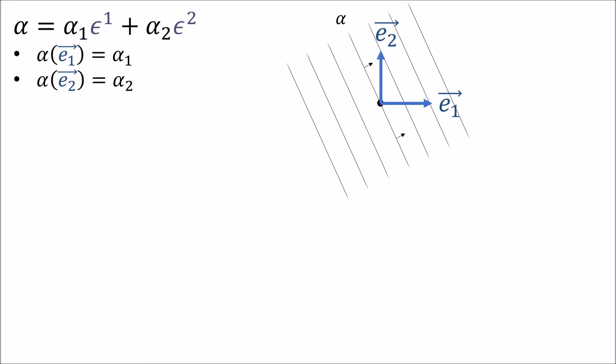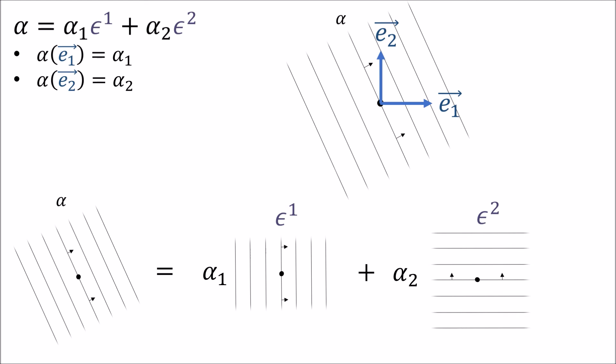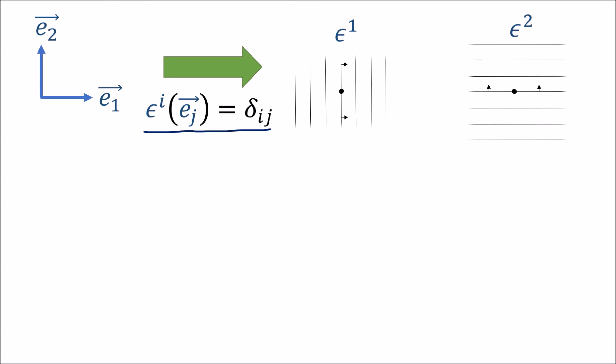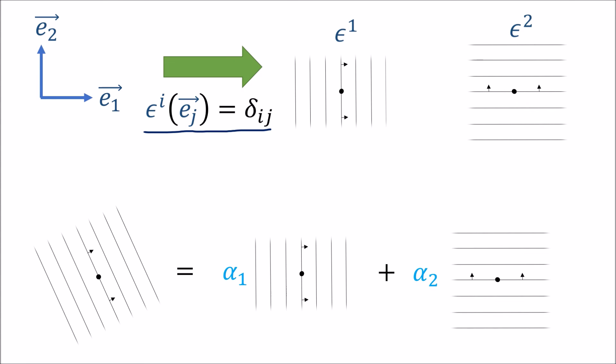Say we have a covector alpha, a stack of lines living in a space with basis e₁, e₂. We can get the components of alpha by applying it to the basis vectors e₁, e₂—we're just going to count the number of lines pierced. Now using these alphas we can write covector alpha as a linear combination of epsilon 1 and epsilon 2 like this. The process is we start with our vector basis and then using this definition we get the dual covector basis. Then using those we can express any covector as a linear combination of the dual basis.